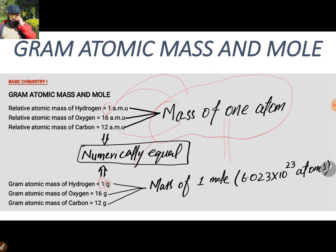The number of atoms will also increase in the same ratio. It has been determined that when we express or take the element in grams instead of AMUs — that is, when numerically the mass of an element is equal to the relative atomic mass, with the difference only in unit — for example, we are taking 1 gram of hydrogen atoms, not 1 AMU. Similarly, we are taking 16 grams of oxygen, not 16 AMU.